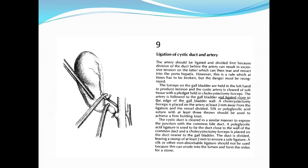Now coming to the cystic duct, it's cleared in a similar manner to expose the junction with the common bile duct. The polyglycolic acid ligature is used to tie the duct close to the wall of the common duct. The cholecystectomy forceps is placed on the duct near to the gallbladder. The duct is divided, leaving a stump of at least two millimeters to ensure a safe ligature. A silk or non-absorbable ligature should not be used because this can erode into the lumen and form the nidus for a stone.